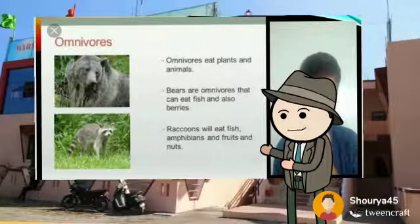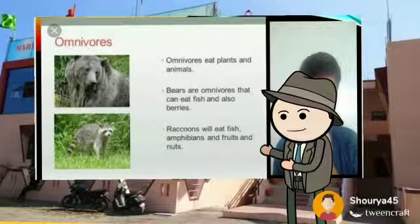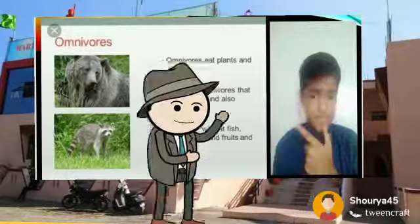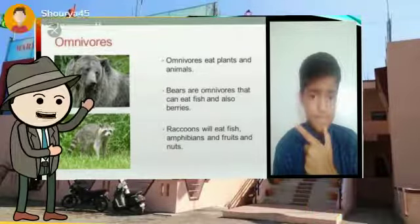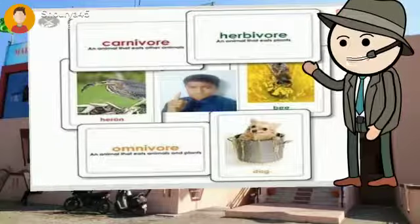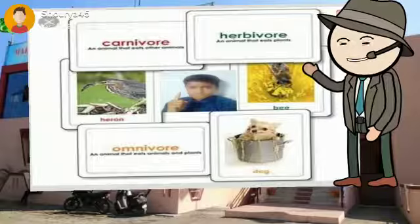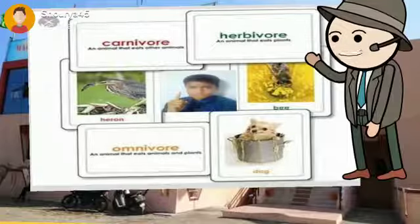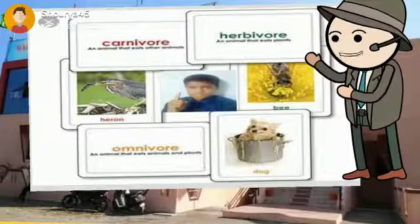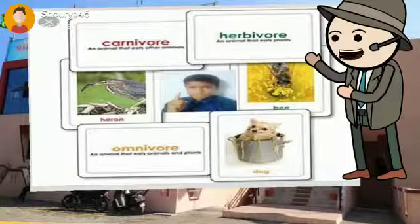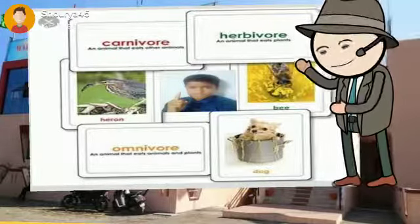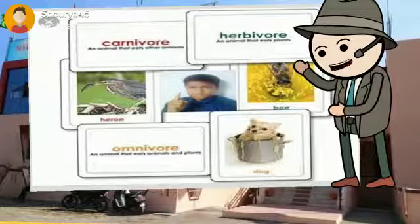Omnivore animals are animals that eat both plants and animals. Examples of them are deer and raccoons. Let us revise once again. Herbivore, carnivore, and omnivore. Carnivore: an animal that eats the meat of other animals. Herbivore: an animal which eats plants and plant products. Omnivore: an animal that eats both animals and plants.